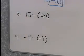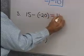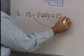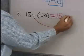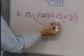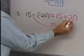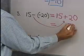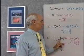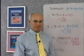How about 15 subtract negative 20? My first number is 15 — it doesn't change. Instead of subtraction, I change to addition. Instead of negative 20, I change to positive 20. So instead of subtracting a negative 20, I add its opposite, positive 20. 15 plus 20 is 35. So 15 subtract negative 20 is always the same as 15 plus 20, which gives us 35.